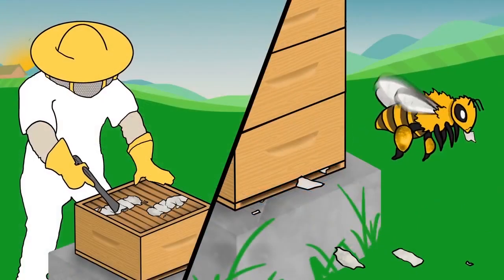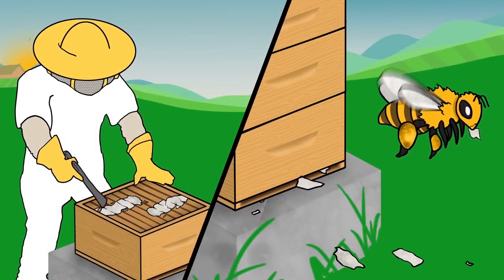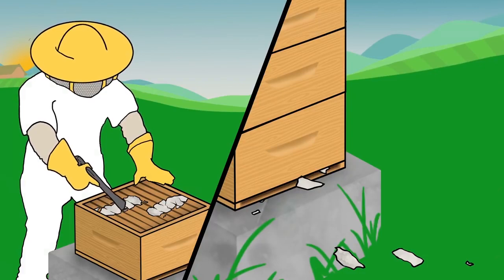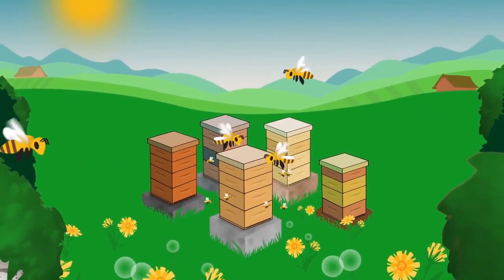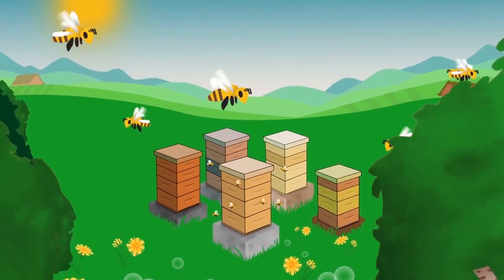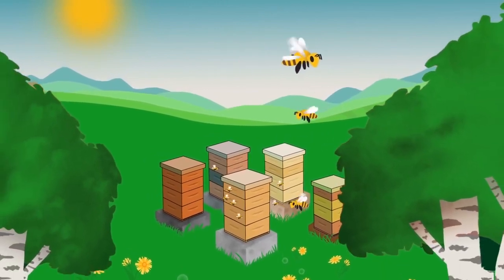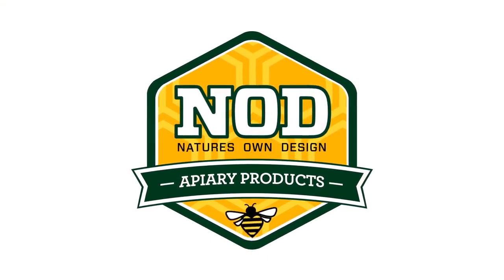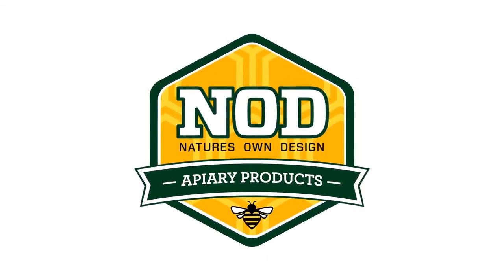The strips do not need to be removed from the hive after the application period. If they are removed, dispose of by composting. Application, temperature, hive strength, configuration and ventilation are key to a successful treatment. MiteAway Quick Strips helps bees to build healthy, vibrant beehives.